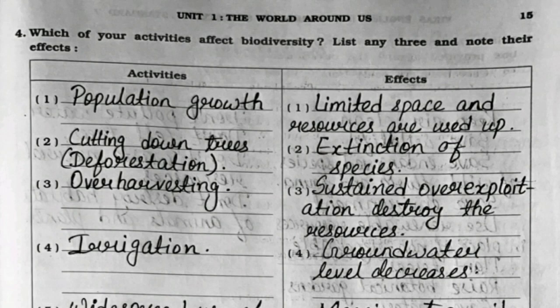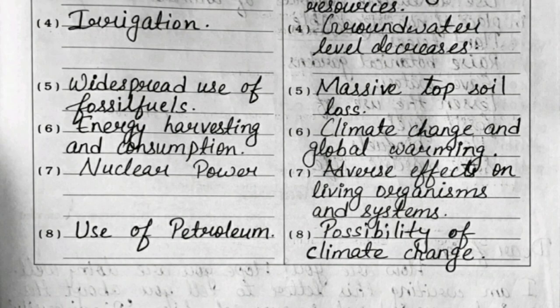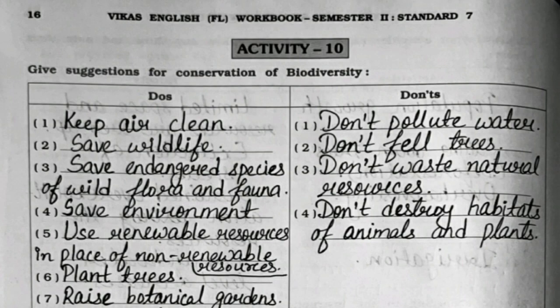Question number four: Which of your activities affect biodiversity? List any three and note their effects. You can see the activities and the effects written over here — check and complete in your workbook. Next is activity number ten: Give suggestions for conservation of biodiversity. Do's and don'ts for the conservation of biodiversity are written over here — you can see and complete in your workbook.